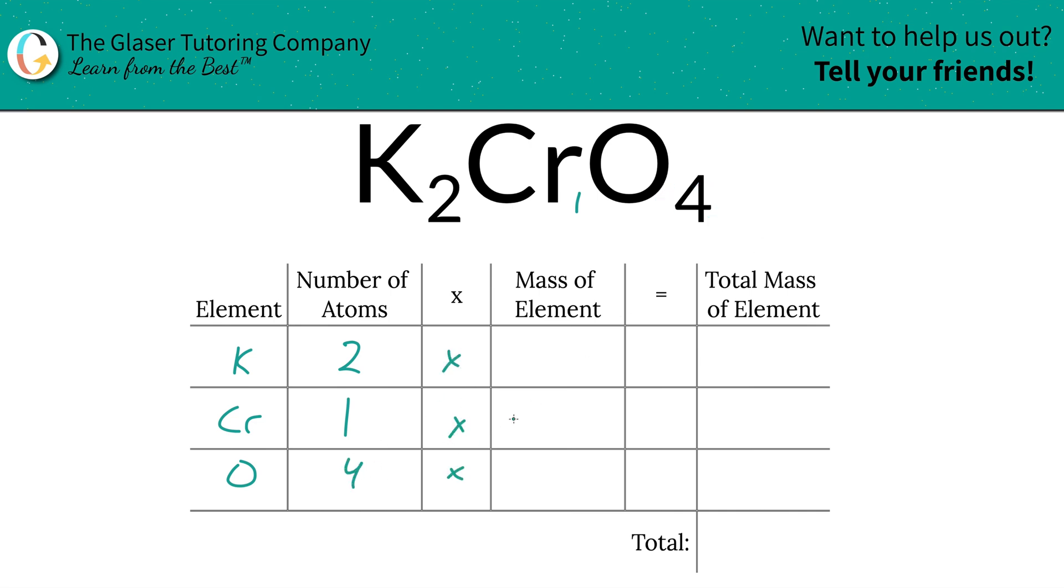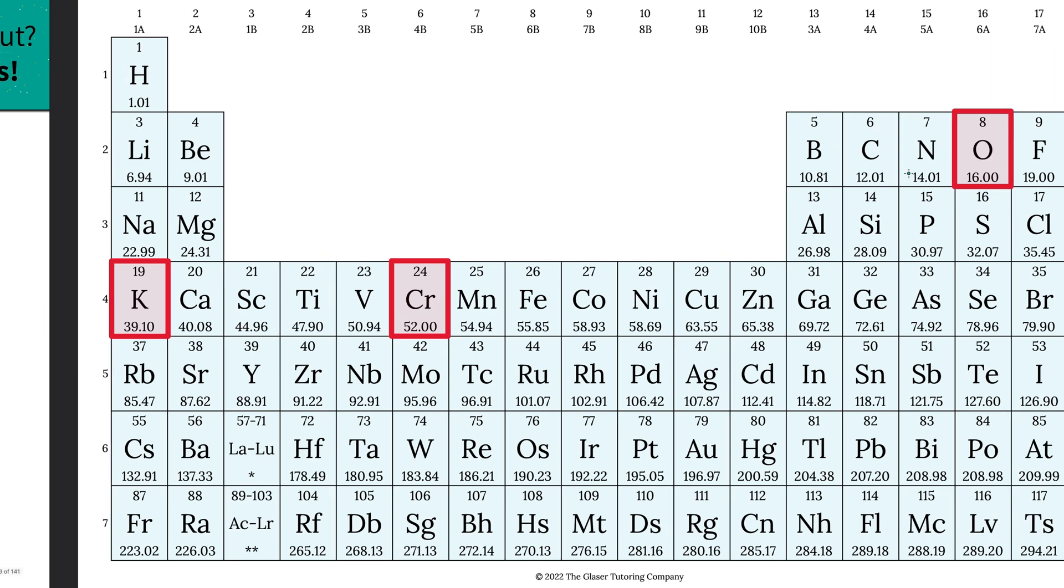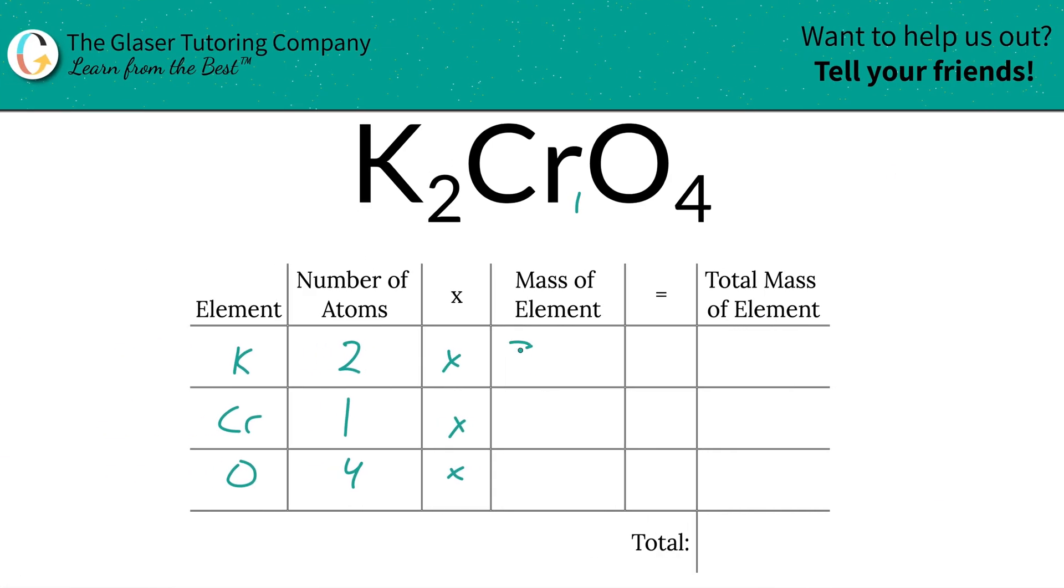We simply take those numbers and multiply by the mass of each particular element. The masses are found here on the table. Potassium is 39.10, chromium is 52, and oxygen is 16. So let's write them in: 39.10, 52, and 16.